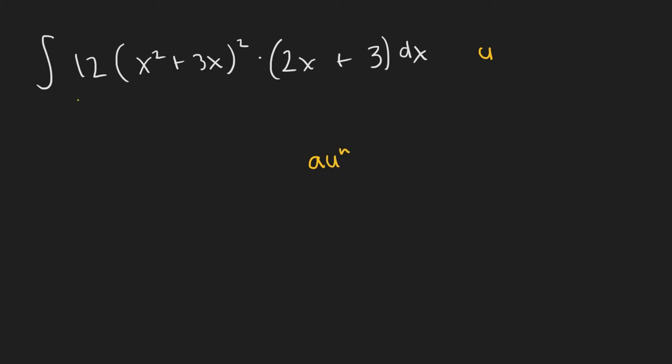Right here, 12, then this inner function to the second power. We see that form matches up with this. So what we'll do is we'll call this inner function that we see u. So on the right, we can write u equals x squared plus 3x.